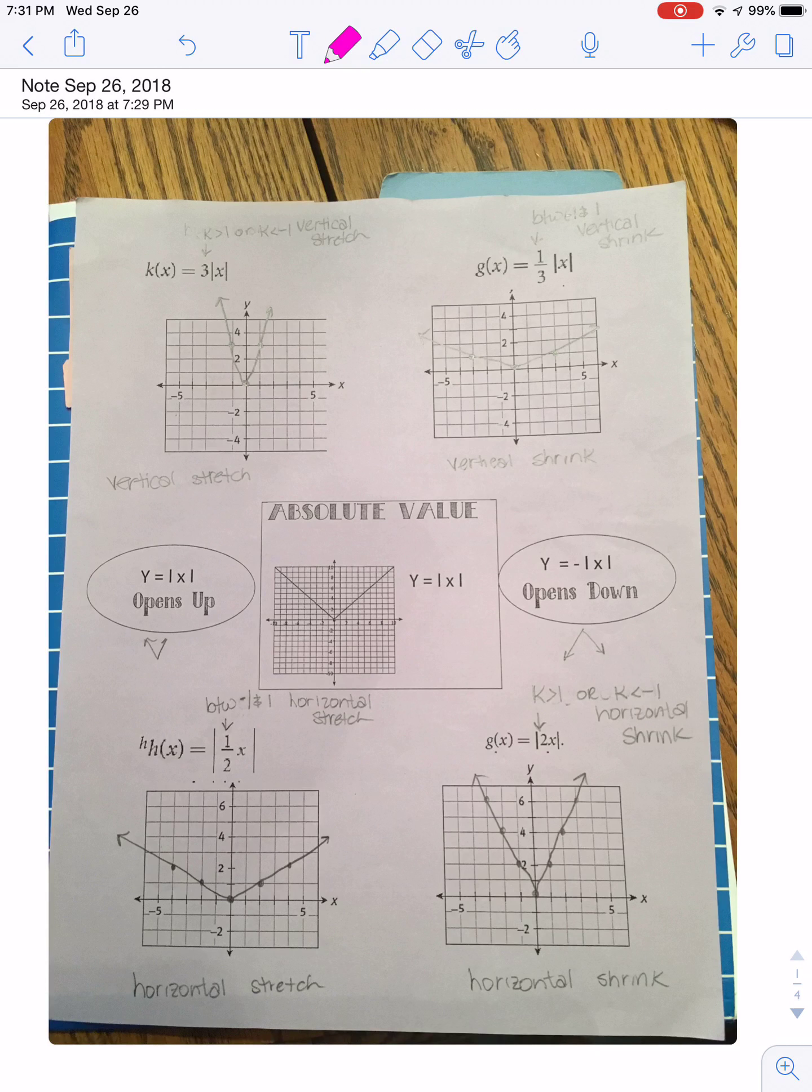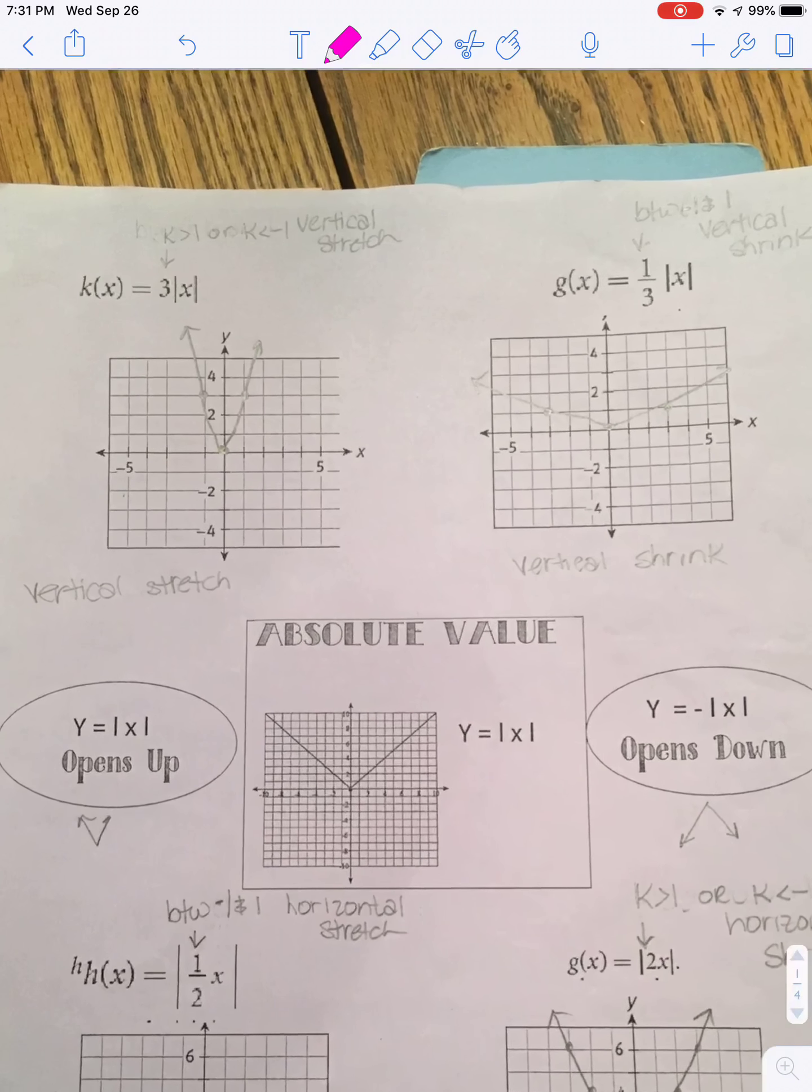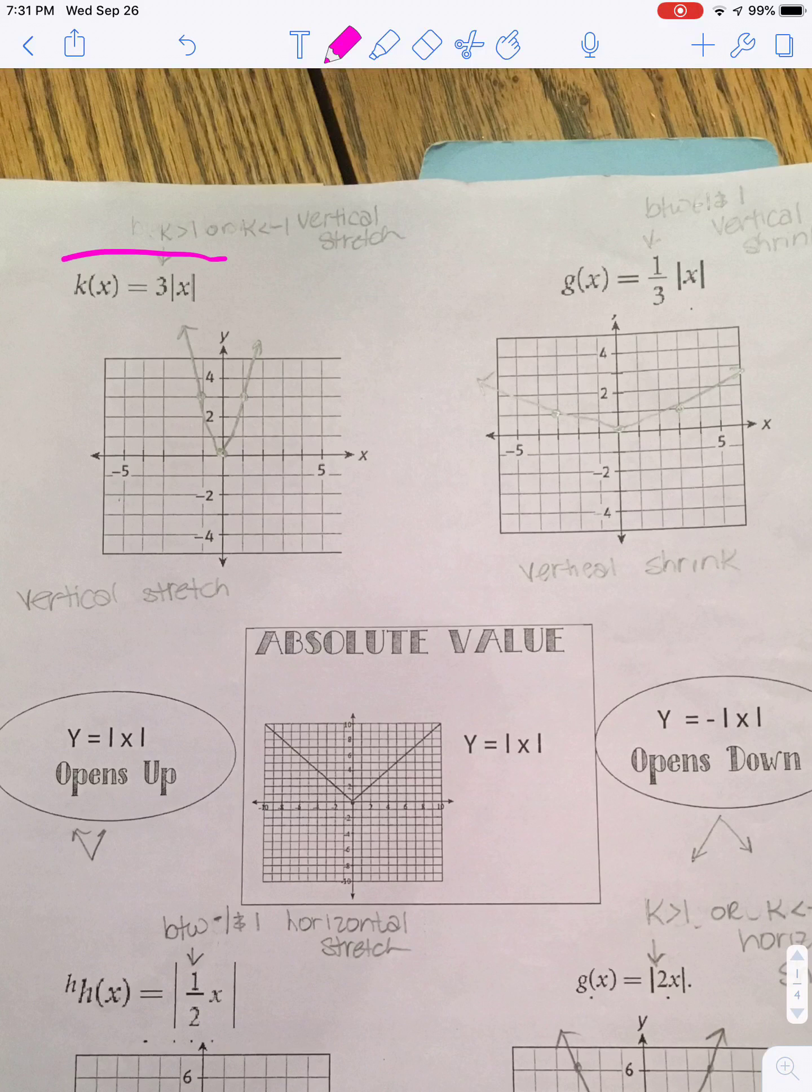Okay guys, let's talk a little bit about the absolute value stuff that we did today. So first of all, we talked about the idea that if I look at something, if the number's on the outside and that number is bigger than 1, that means it's going to be a vertical stretch.